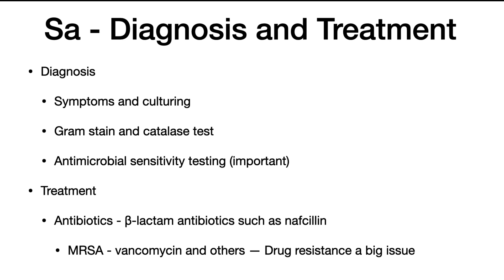Once cultured, they will do a gram stain looking for gram-positive cocci and clumps, and a catalase test, which again differentiates it from other organisms. Antimicrobial sensitivity testing is essential because there are many drug-resistant S. aureus strains, and you have to use the right drug to get rid of it. Treatment is with antibiotics. Beta-lactam antibiotics, such as nafcillin, have been successful. With MRSA, you may need to use vancomycin or others. Drug resistance is becoming a big issue. That's it for Staphylococcus aureus.